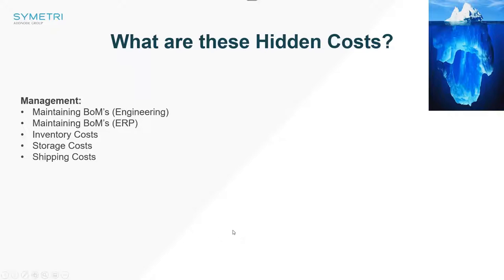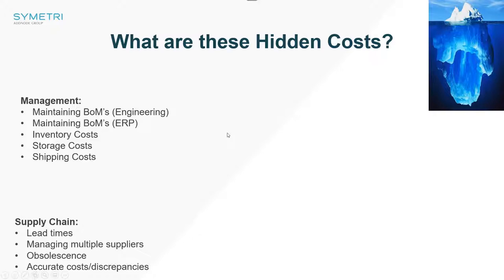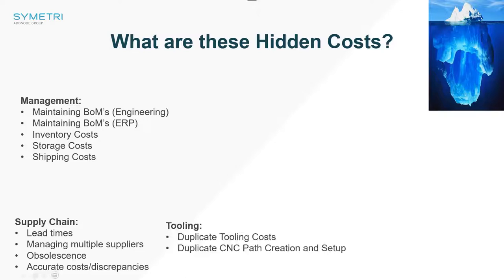What are these hidden costs? Every time we bring in a new part, there's a management cost. We need to maintain our BOMs, manage them through an ERP system. We've got inventory costs, storage costs, shipping costs. Moving through to our supply chain, there are lead times, and we might have to manage multiple suppliers. Obsolescence becomes an issue — are there accurate costs, are there discrepancies? Have we got the same part with two different part numbers within two different suppliers in two different regions without realizing it? What happens with tooling? You might, worst case, have two tools paid for that are for the same part, or more likely two duplicate CNC toolpaths to maintain, or DXFs for waterjet and laser cut parts that could become out of sync.